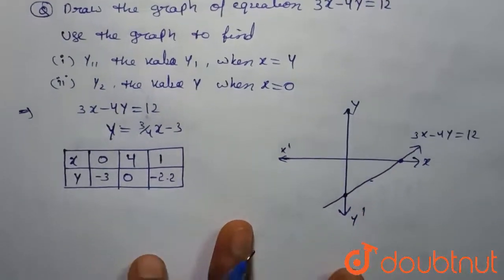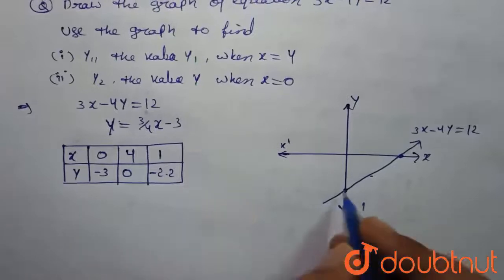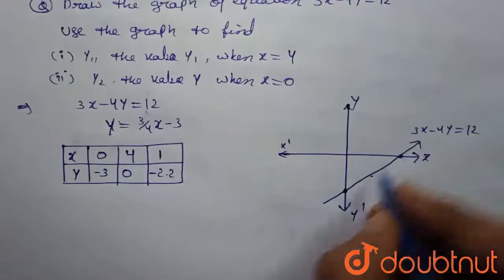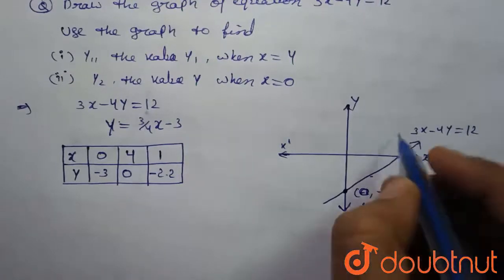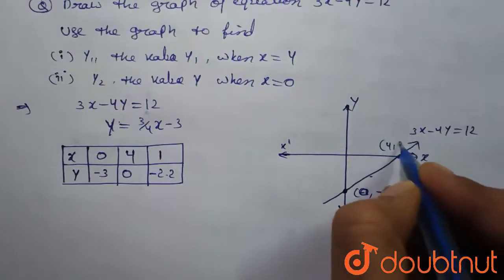Now, this point is 0, minus 3 and this point is 4, 0.